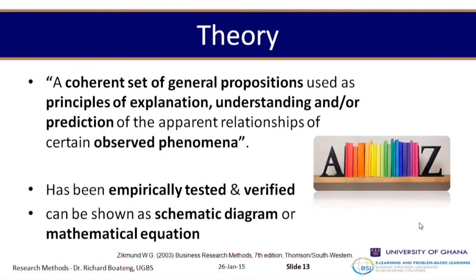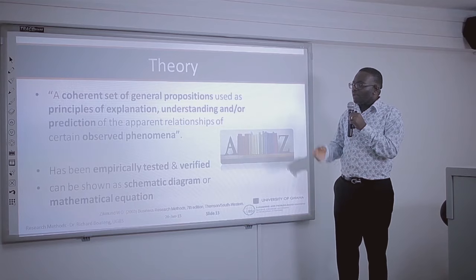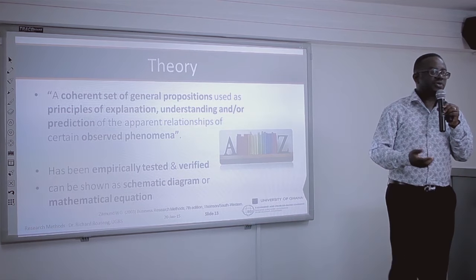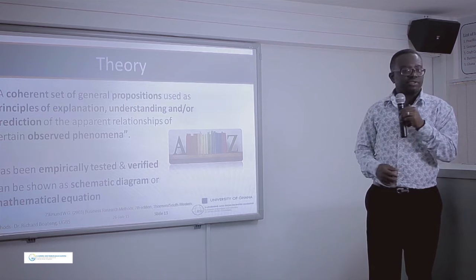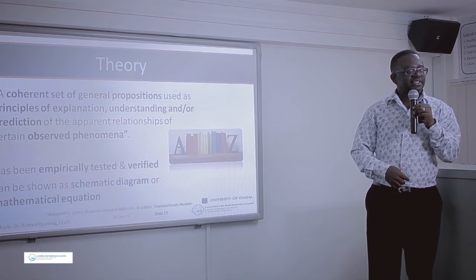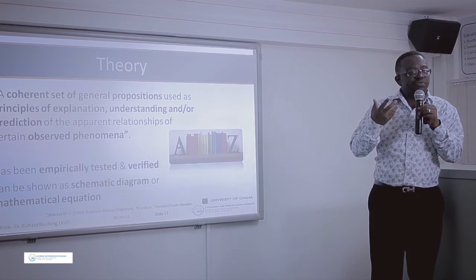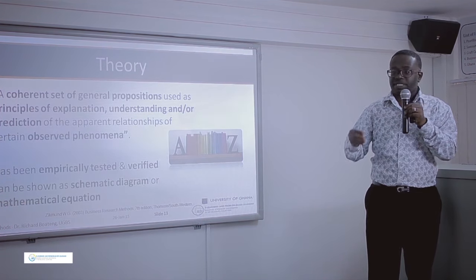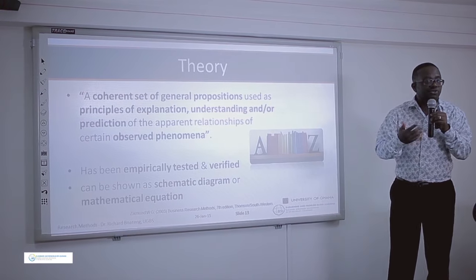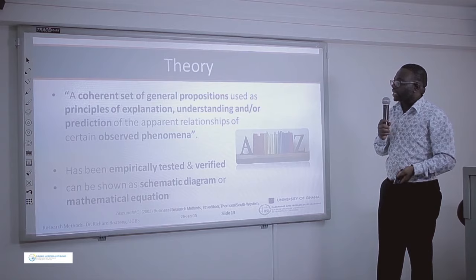A theory is a set of general propositions used as principles of explanation, understanding, and prediction of apparent or observed relationships of certain observed phenomena. Every theory has been empirically tested and verified. Interestingly, theories can be shown in a schematic form as a diagram or expressed as a mathematical equation, like pi r squared or half base times height. From high school we have actually been exposed to theories of life — they help us understand how social systems or physical systems work.